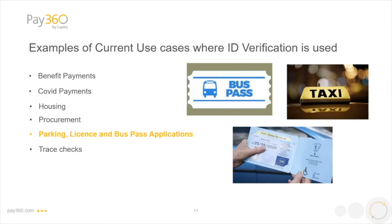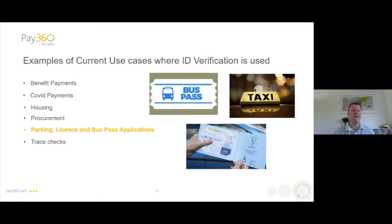Another area within local authorities is people applying for services like disabled parking badges, free bus passes, and taxi or other licences. There needs to be some level of identity verification — making sure the person applying for a bus pass is old enough, that a disabled parking badge is linked to the address, and for taxis, that the person is who they say they are and holds a legitimate driving licence. Sadly, there have been cases where people pose as taxi drivers with fake licences, which has led to accidents and worse.